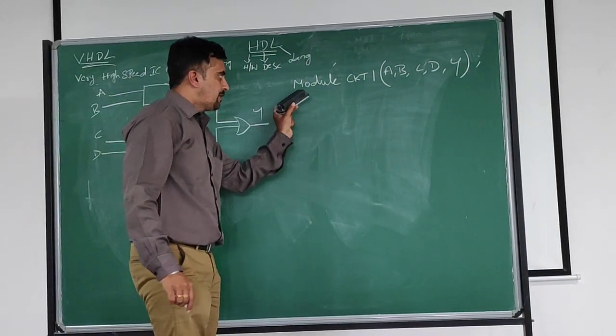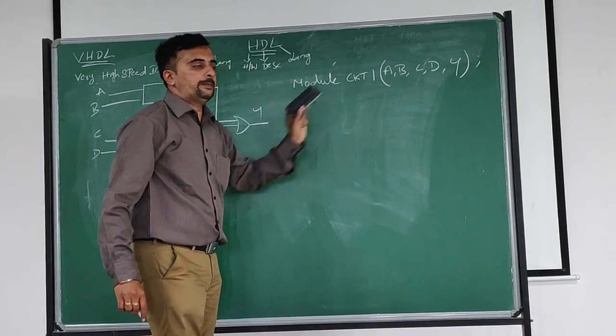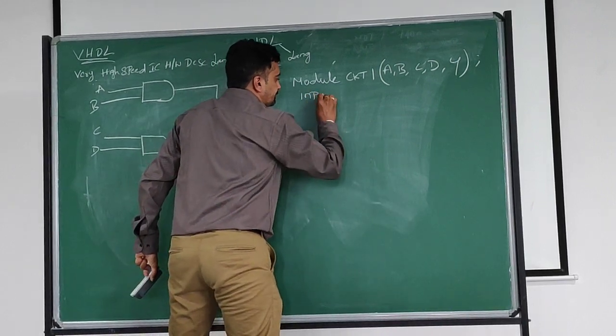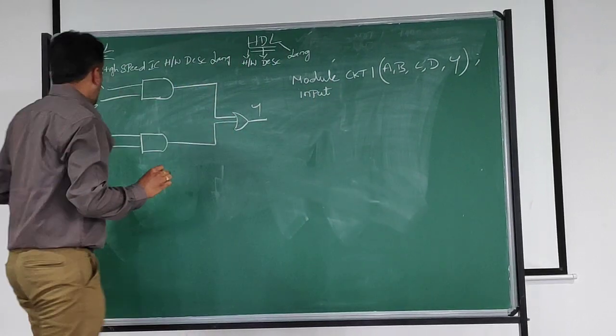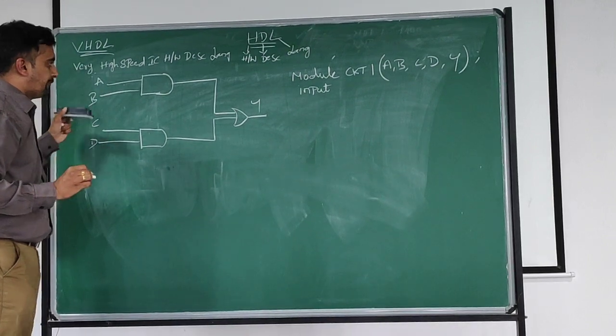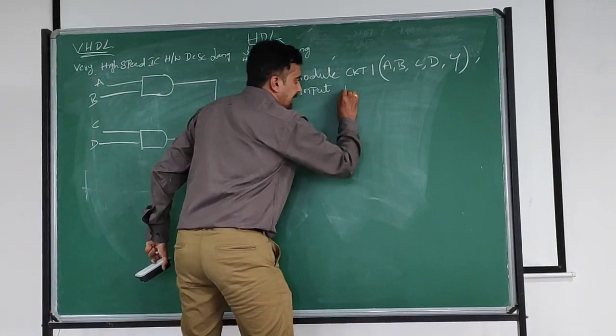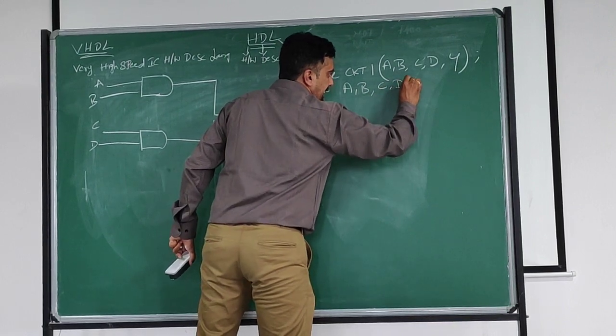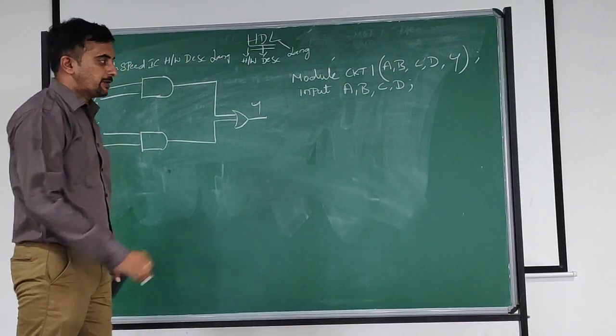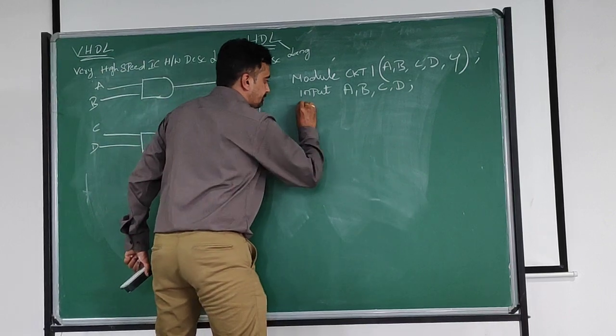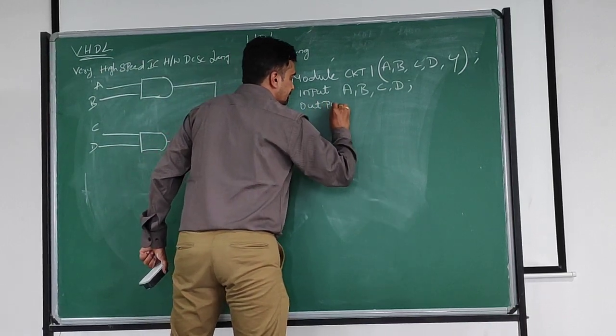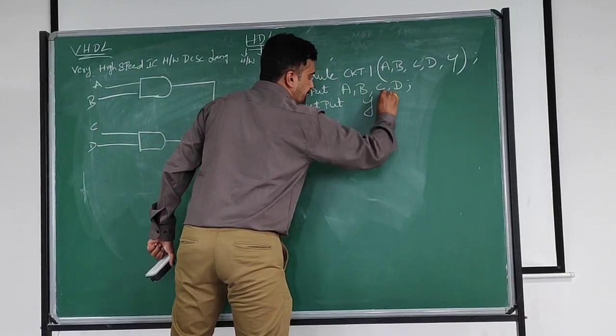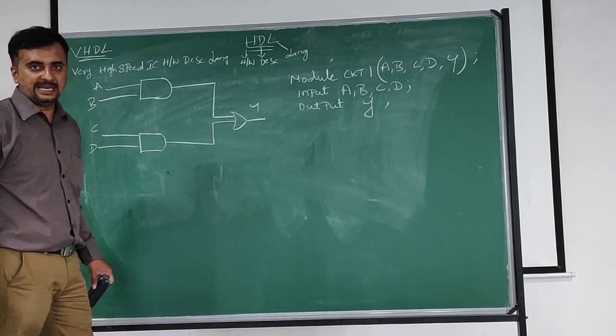Next, in general structure remember, I have to write input variable. First write as in input. Input, which are all the variables A, B, C, D are four inputs. Write A, B, C, D and semicolon. Next, after input write output. Output is one, only one output is there.